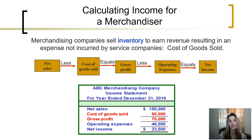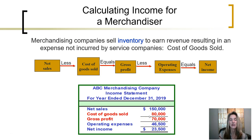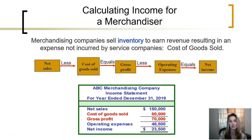Gross profit is a new calculation made and reported. As we are seeing down here with ABC Merchandising Company, they're reporting revenues earned of $150,000 less the cost of the inventory that was sold to earn those revenues, for a gross profit of $70,000. That gross profit indicates the company sold their inventory for $70,000 more than what it had cost them. That does not mean they had a net income of $70,000, because the gross profit is the amount of profit only after that one expense, cost of goods sold, is subtracted.